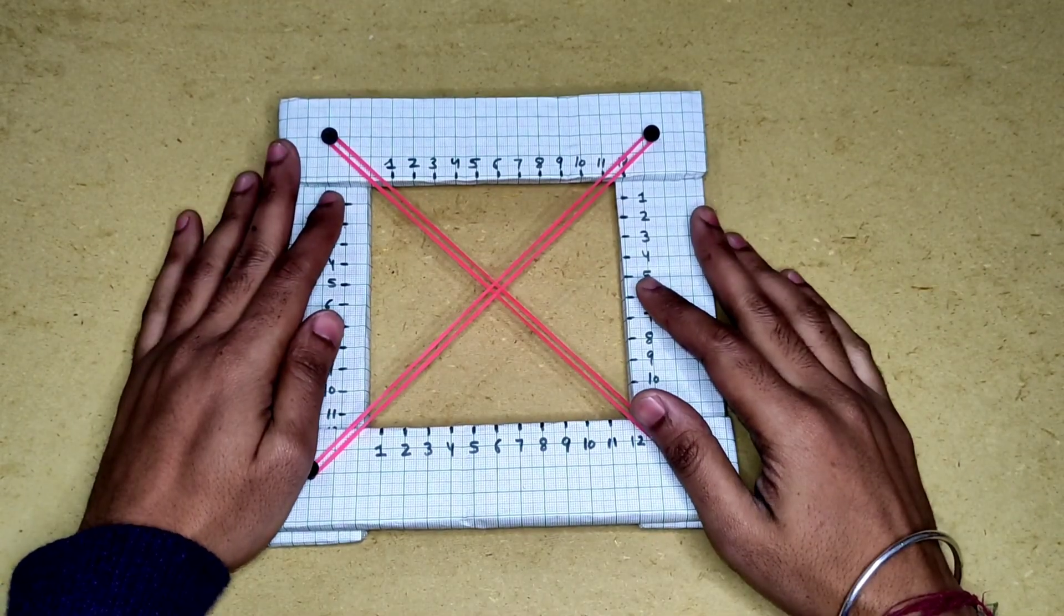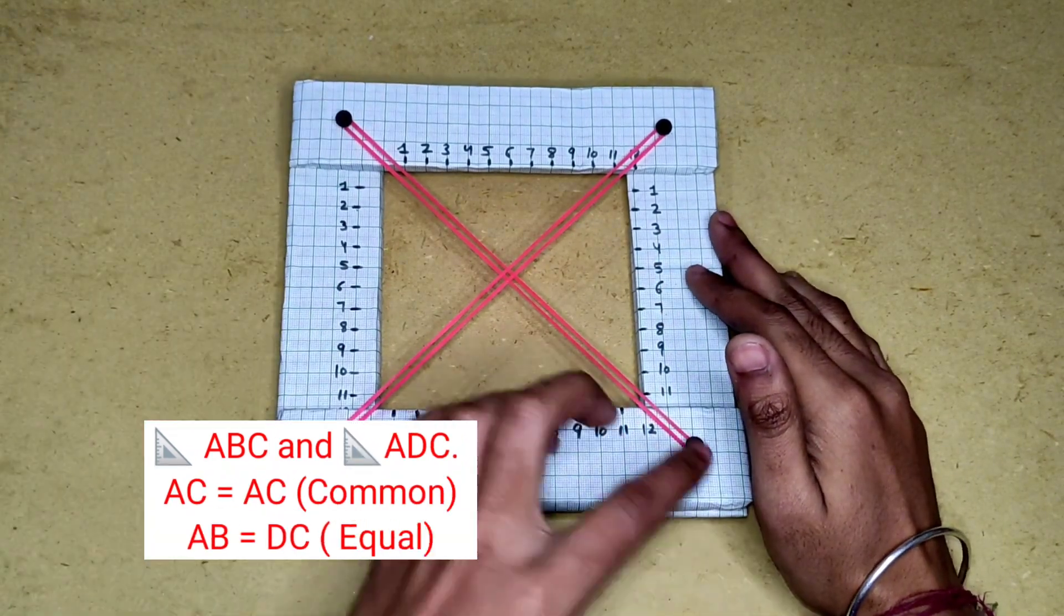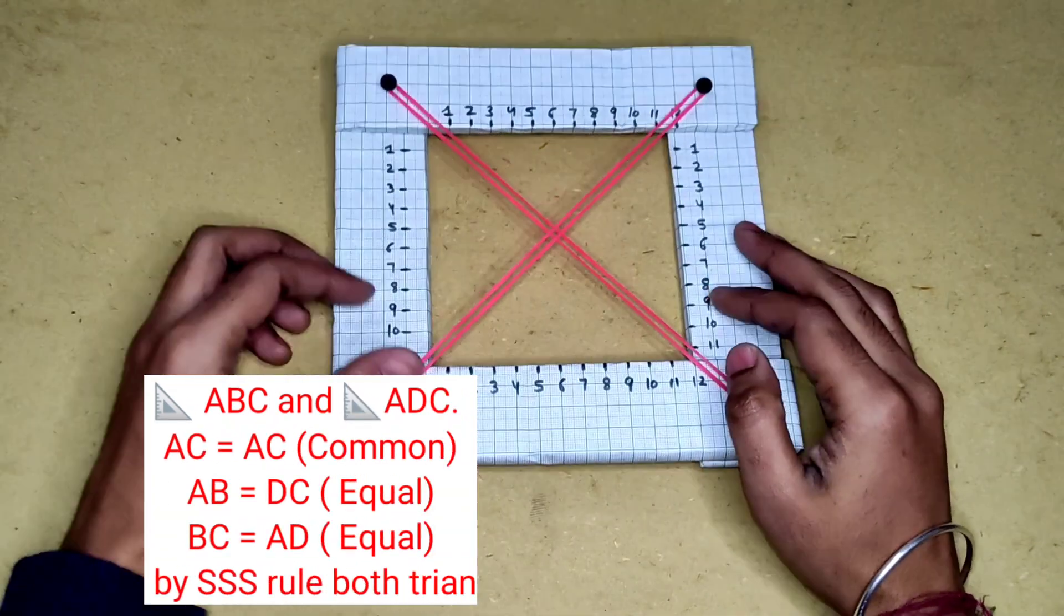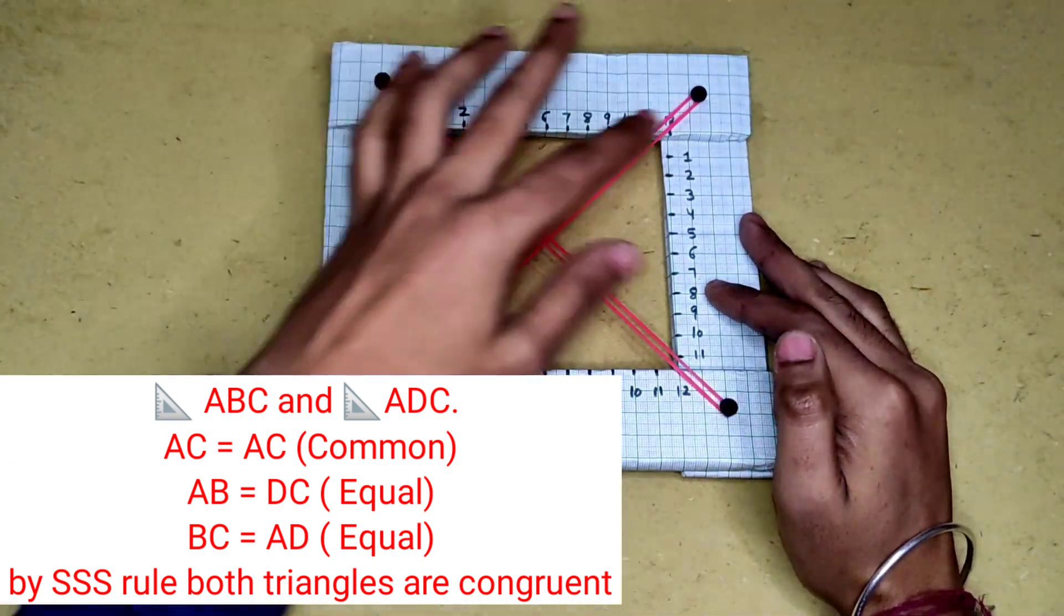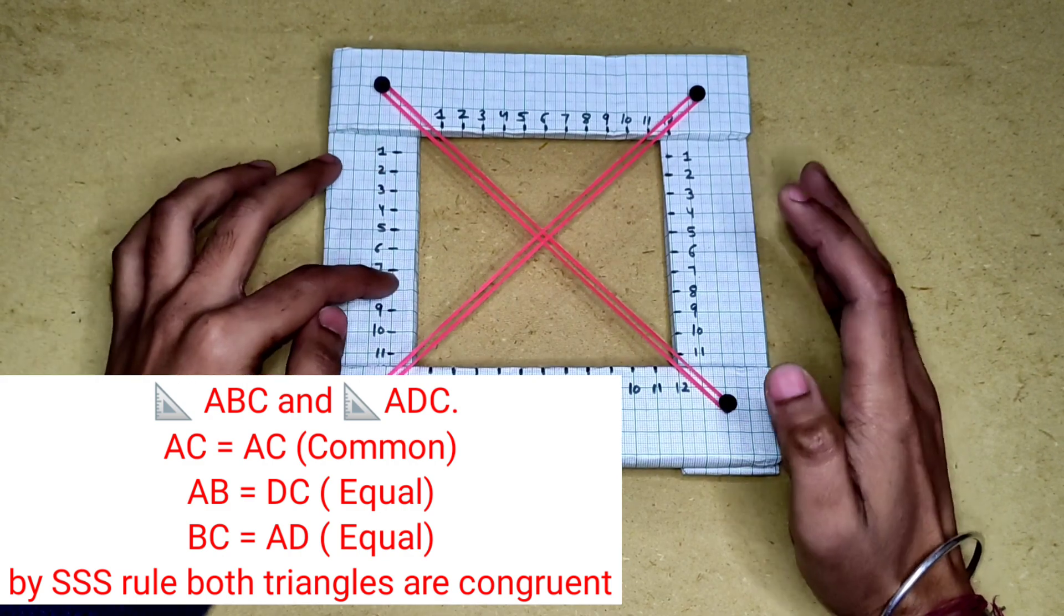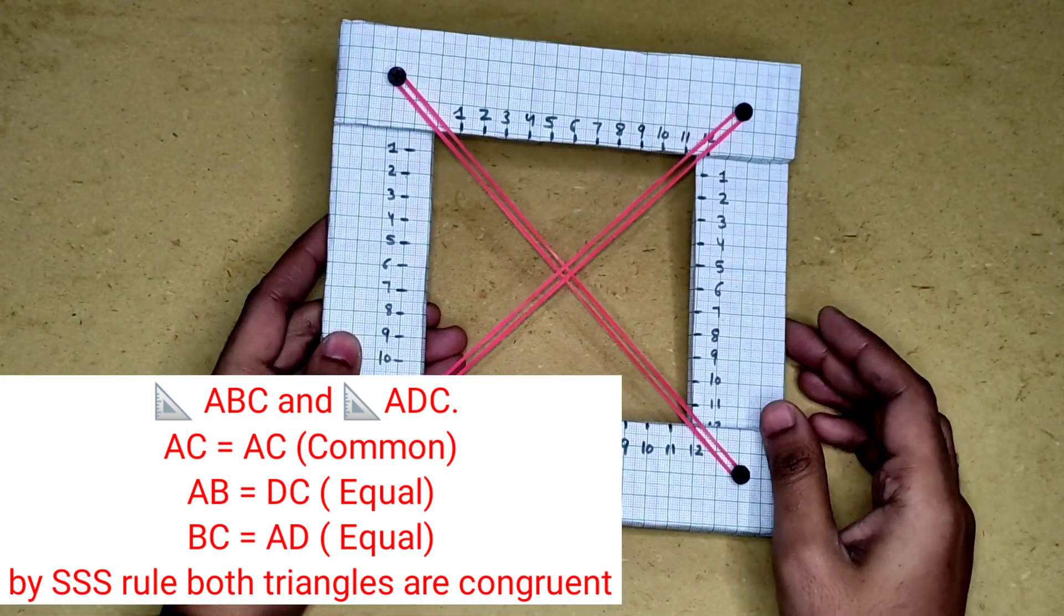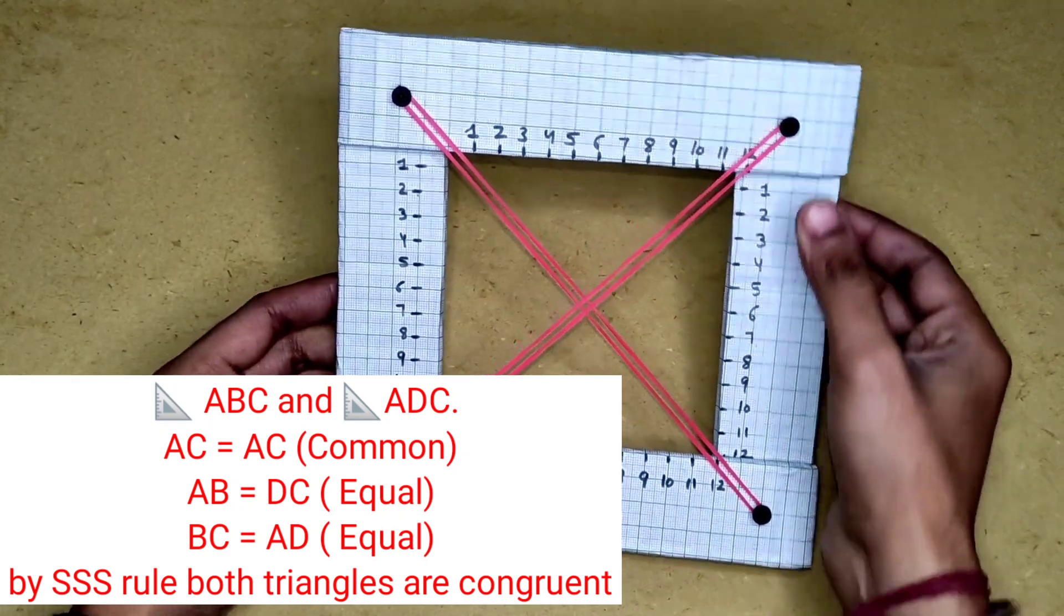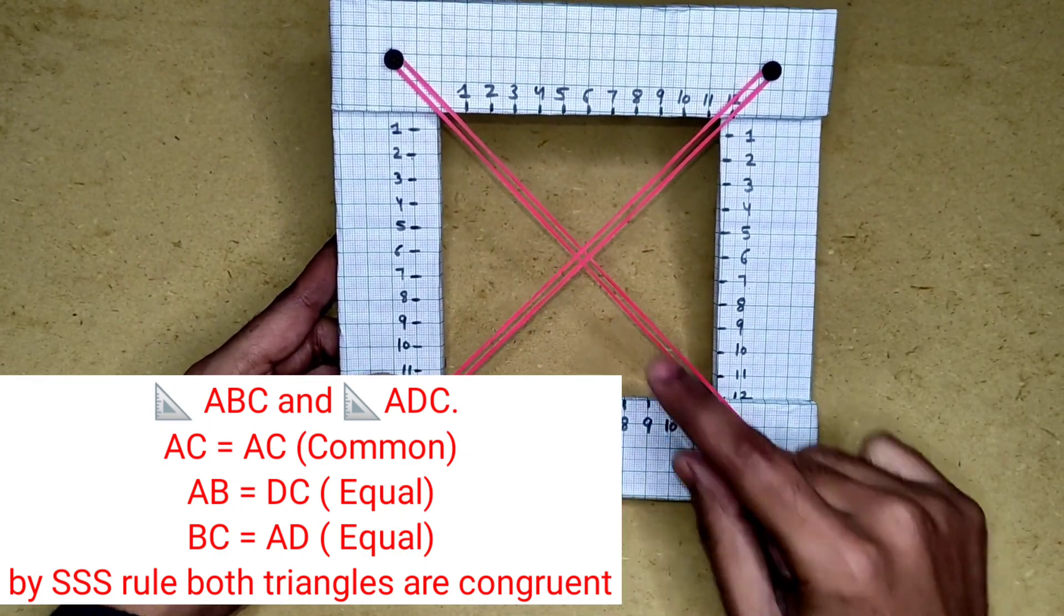So here we can see, I am taking two triangles, that's ABC and ADC. If you are checking these triangles, this side is common in both triangles. And this side is equal to this side. And this side is also equal to this side. So here is 12 cm and this one is 12 cm. You can check, this is 12 cm and this is 12 cm. And this side is common between these two triangles.